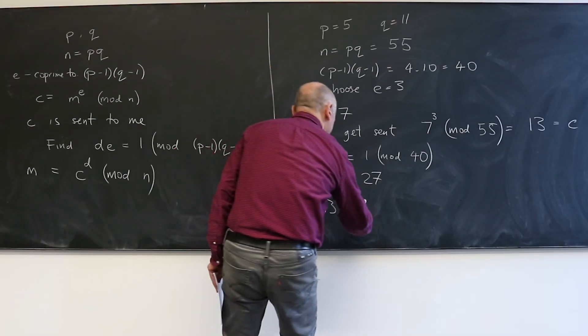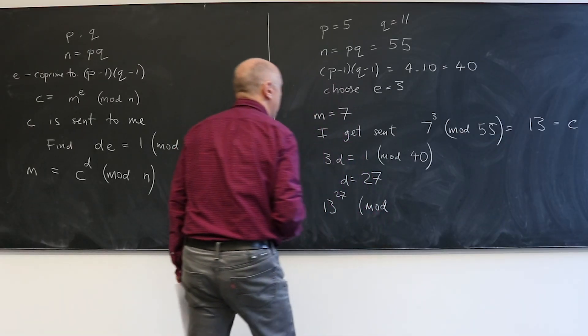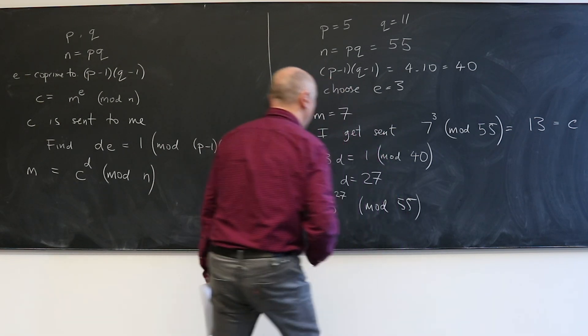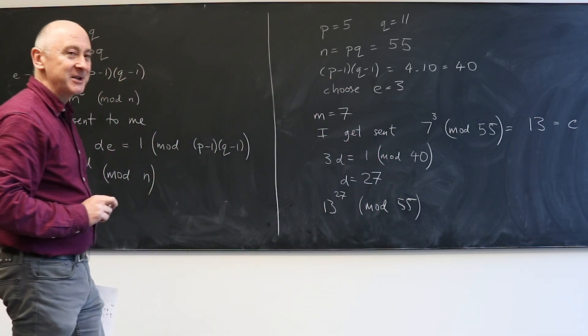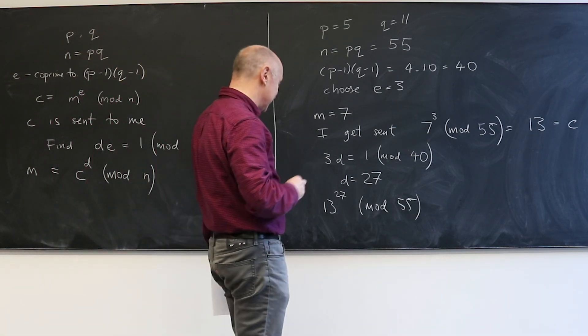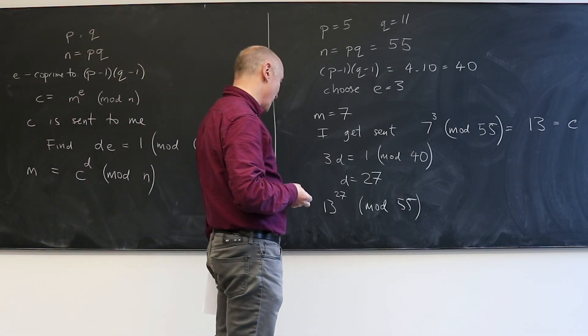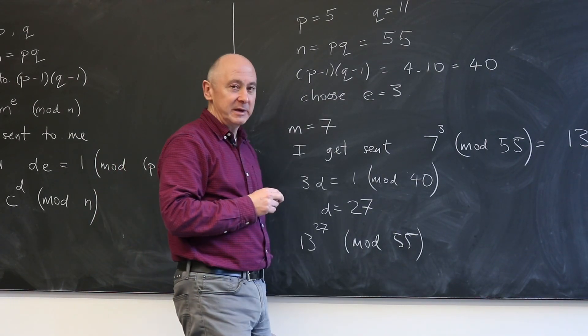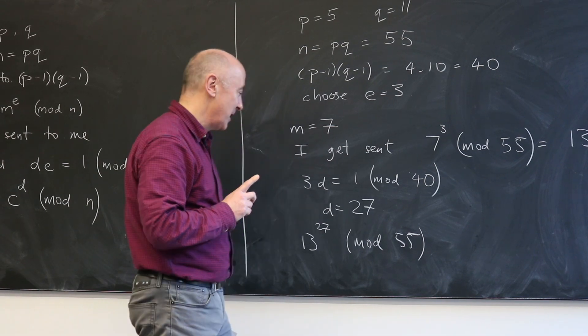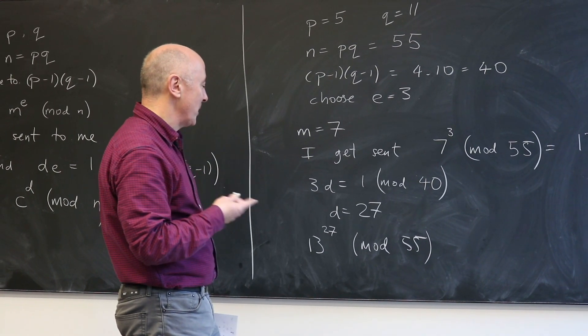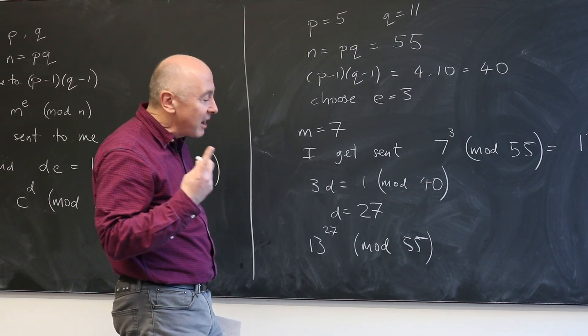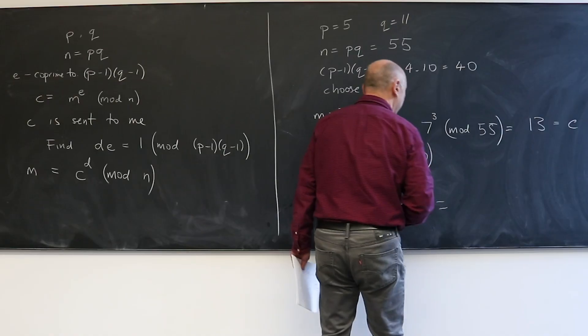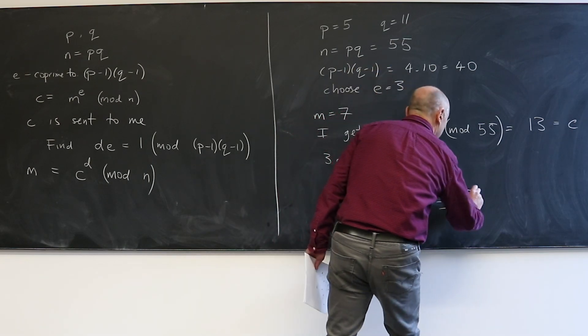And I'm meant to get 13 and raise it to the power 27, gulp, and do that modulo 55. And if you do that, it's an exercise that you might want to try at home, and you might want to try to think of clever methods to do this. You can do this on a piece of paper. I did last night. So I invite you to think about clever ways to do that. It's not as hard as it looks.